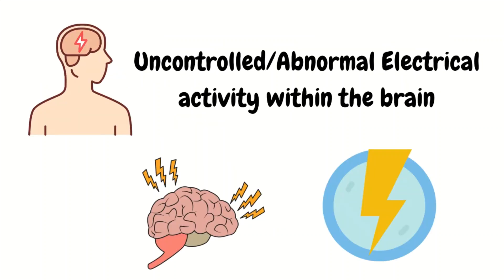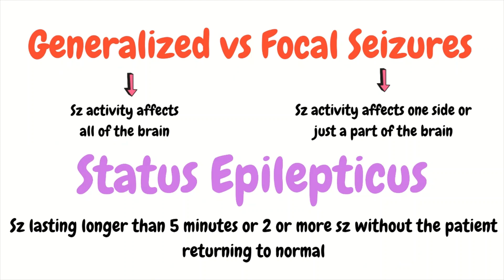Simply, what are seizures? Seizures are uncontrolled or abnormal electrical activity within the brain that can lead to alterations in mentation and in motor and sensory functions. The common trait we are familiar with is the jerking-like movements patients can present with. You can have generalized and focal seizures, each divided into different types. And more importantly for the emergency department, you have status epilepticus, defined as a seizure lasting longer than 5 minutes or 2 or more seizures without the patient returning to their normal baseline mental status.